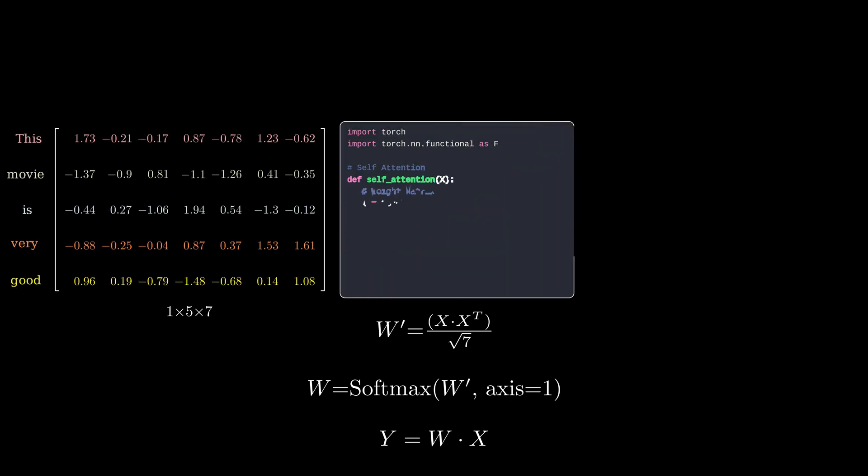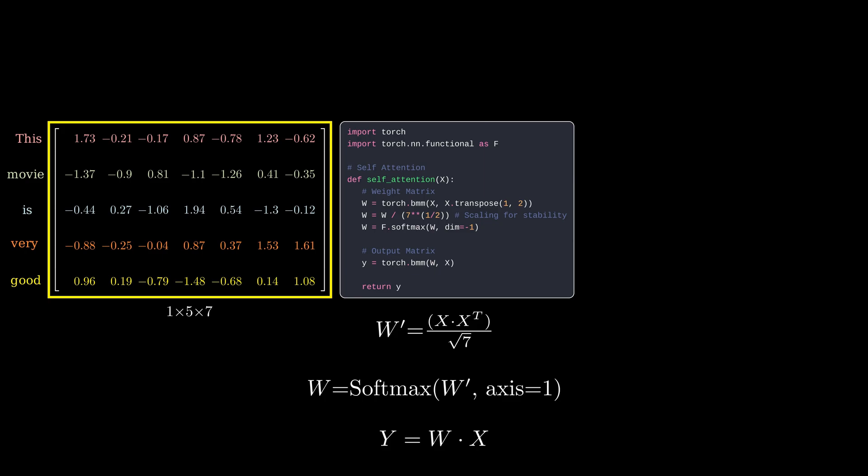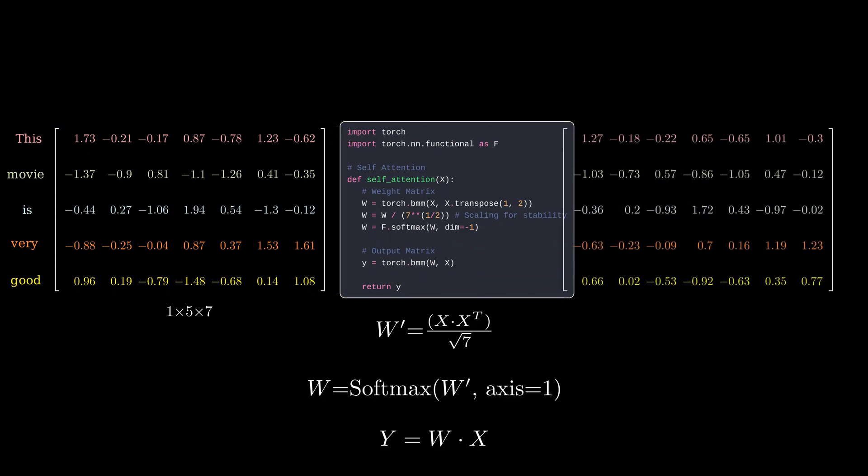Writing this as a python function is pretty straightforward. For a given input tensor x, we can use PyTorch to define matrix multiplication and return the output.